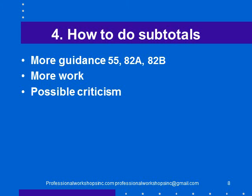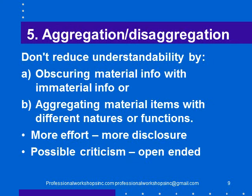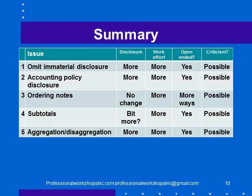Number four: there's more guidance on how to do subtotals, so that's more work, and there is criticism if we haven't done the subtotals in the way users wanted. Finally, aggregation and disaggregation: we are not supposed to reduce understandability by obscuring material information with immaterial information. It's not entirely clear exactly how we could obscure something large with something tiny and insignificant, but that's an issue we'll have to think about as we prepare financial statements. We're also not supposed to aggregate material items that have different natures or functions, so again that's going to be more disclosure and more work as we try to decide whether things have different natures or functions — and again it's open-ended, leaving open possible criticism.